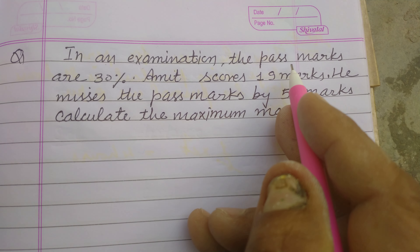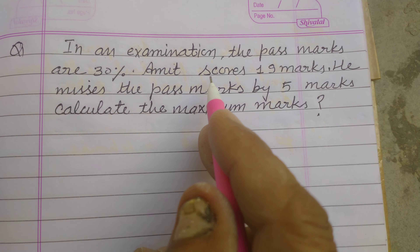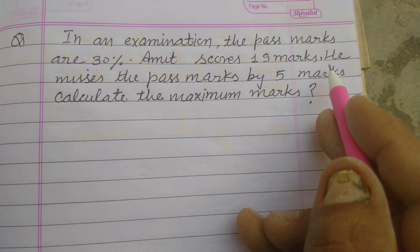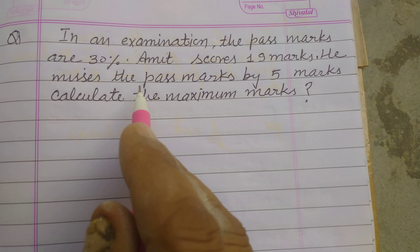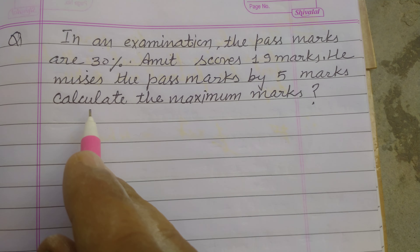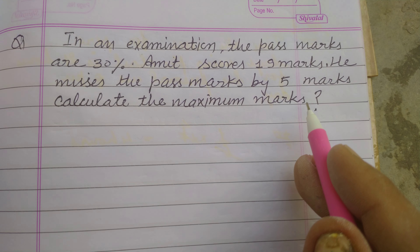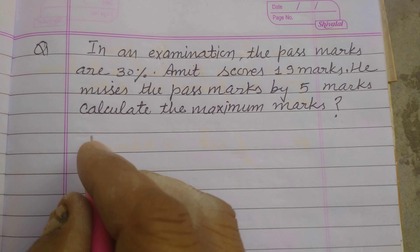In an examination, the pass marks are 30%. Amit scored 19 marks and missed the pass mark by 5 marks. Calculate the maximum marks.